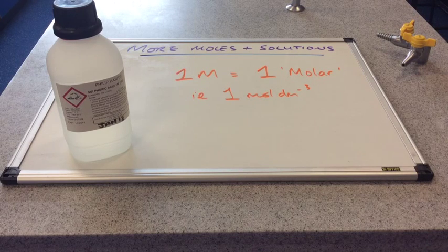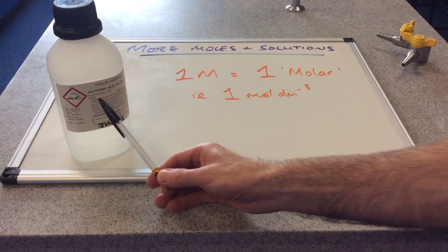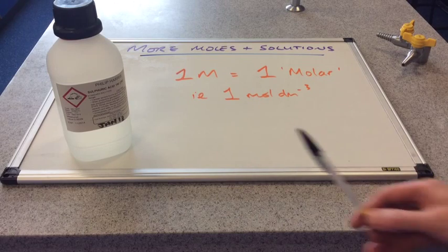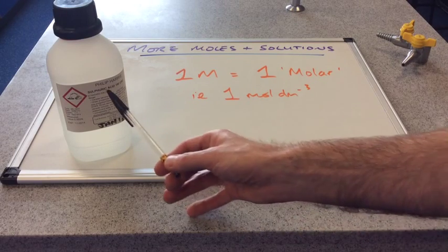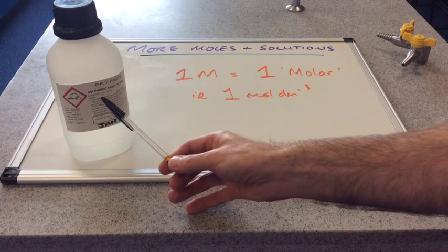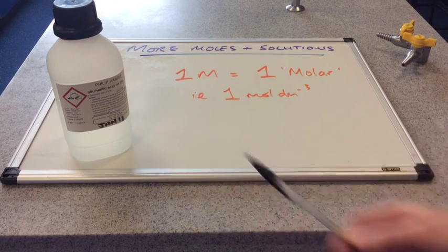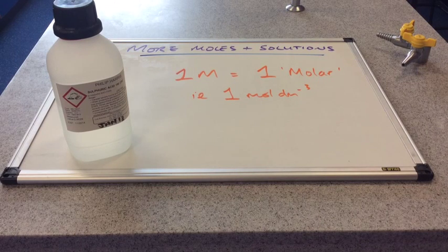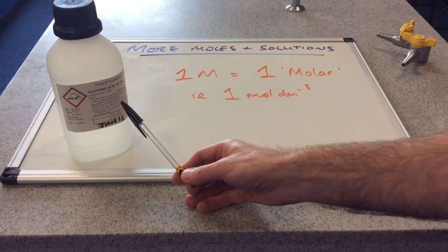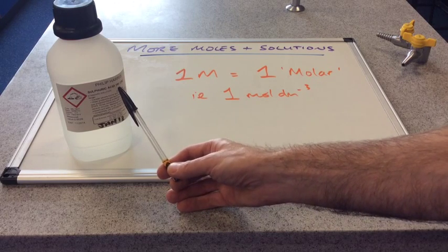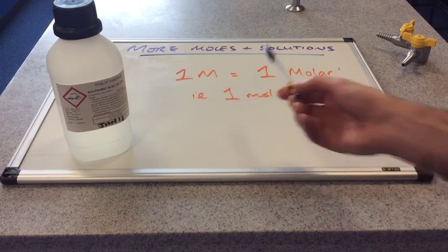The other piece of information I want to pick out is this here, this standard solution. So we've bought this bottle of acid in from Philip Harris and it's what we call a standard solution. What that means is we know the concentration of this solution. So this is a standard solution of sulfuric acid with a concentration of one molar, one mole per decimetre cubed.